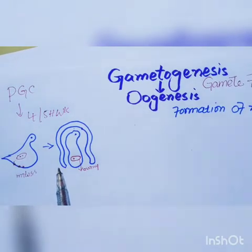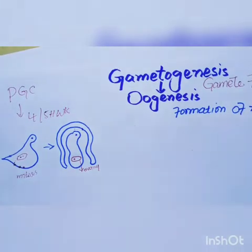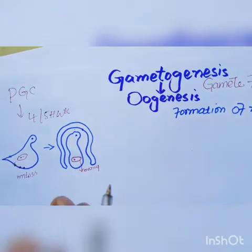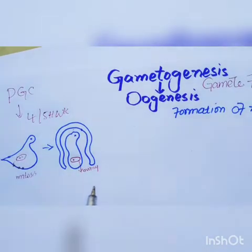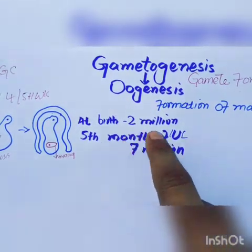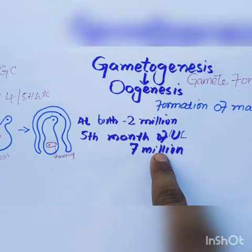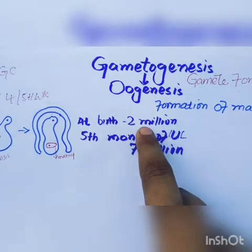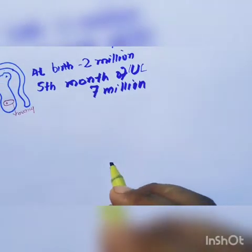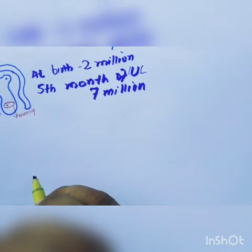After birth there will be no oogonia in the ovary — before birth all the oogonia are converted into primary oocytes. At birth, about two million primary oocytes are formed. Around the fifth month of intrauterine life there are seven million primary oocytes, which reduce to only two million at birth.